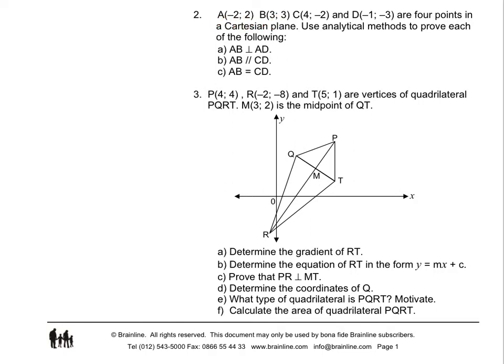Question B: prove that AB is parallel to CD, so they must have the same gradients. Question C: prove AB equal to CD, so we will use our distance formula. Then question 3: we are also given three coordinates which are vertices of the quadrilateral PQRT.